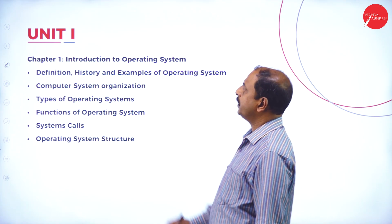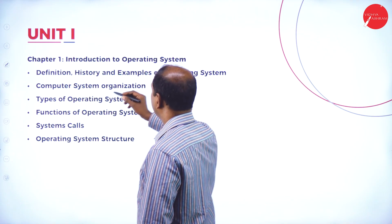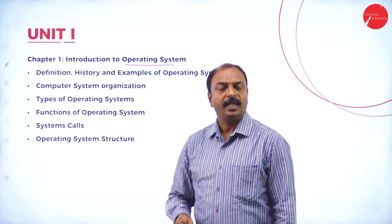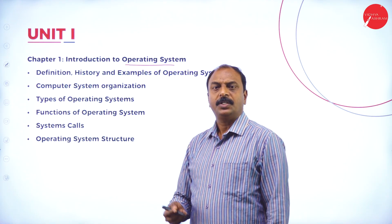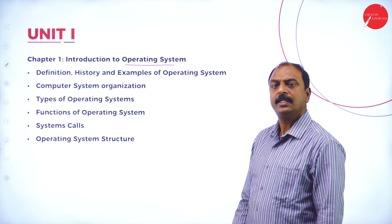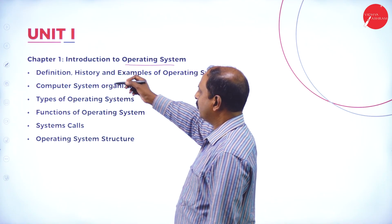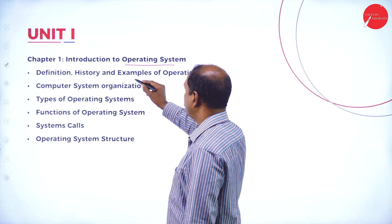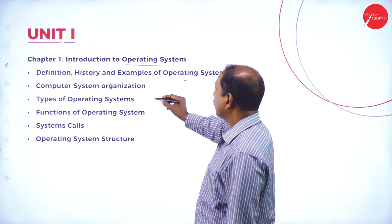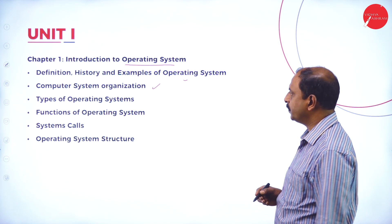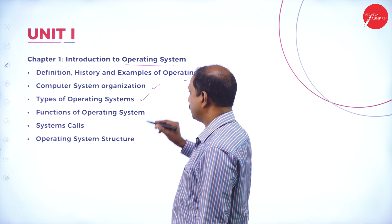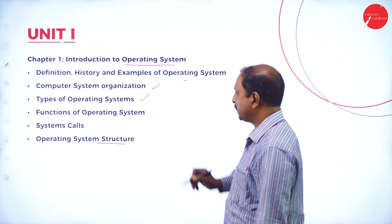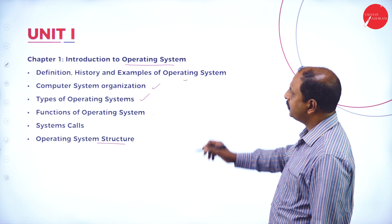Unit 1, Chapter 1 is an introduction to operating systems. Everyone is familiar with operating systems like Windows, DOS, Unix, Linux, and Ubuntu. In this chapter we will learn in detail the different functions of operating systems: definition, history, and examples of operating systems, computer system organization, physical components of a computer system, types of operating systems, functions of each operating system, system calls, and operating system structure.